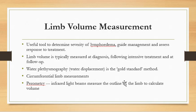Limb volume measurement is a useful tool to determine the severity of lymphedema, guide management, and assess response to treatment. It is typically measured at diagnosis, following intensive treatment, and at follow-up. Water plethysmography (water displacement) is the gold standard method. Circumferential limb measurements and perometry — using an infrared light beam to measure limb outline — are also performed.